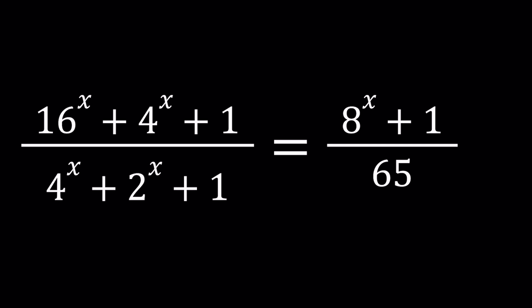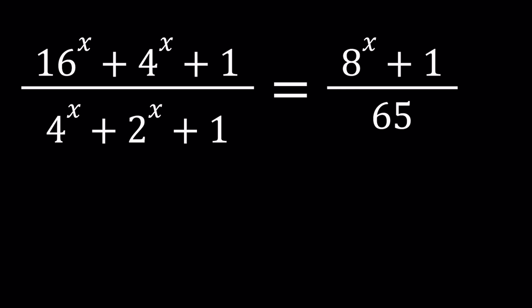Before we do cross multiplication, there's something that will help you a great deal and that is substitution. We're going to pick the lowest base, which is 2. So we're going to set 2^x equal to y, and then evaluate everything in terms of y.